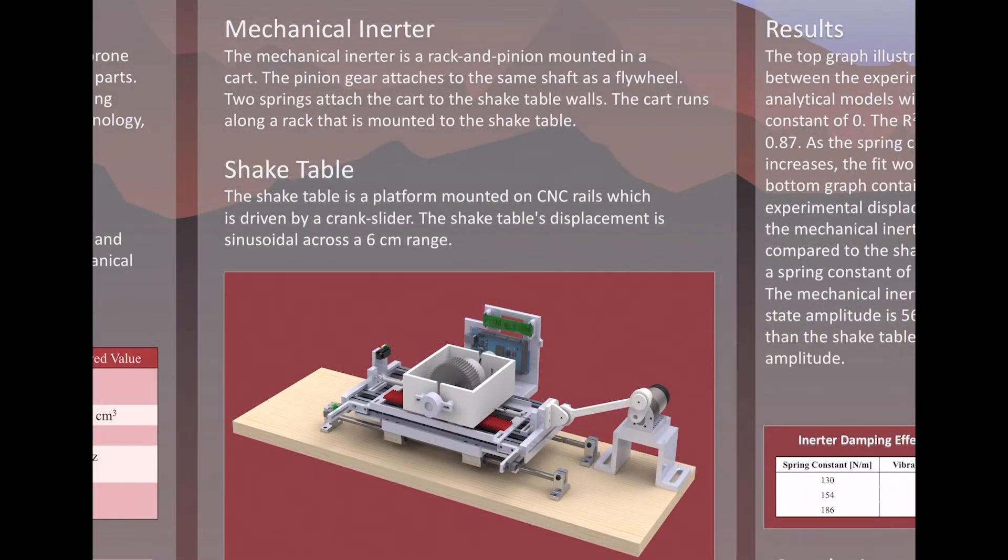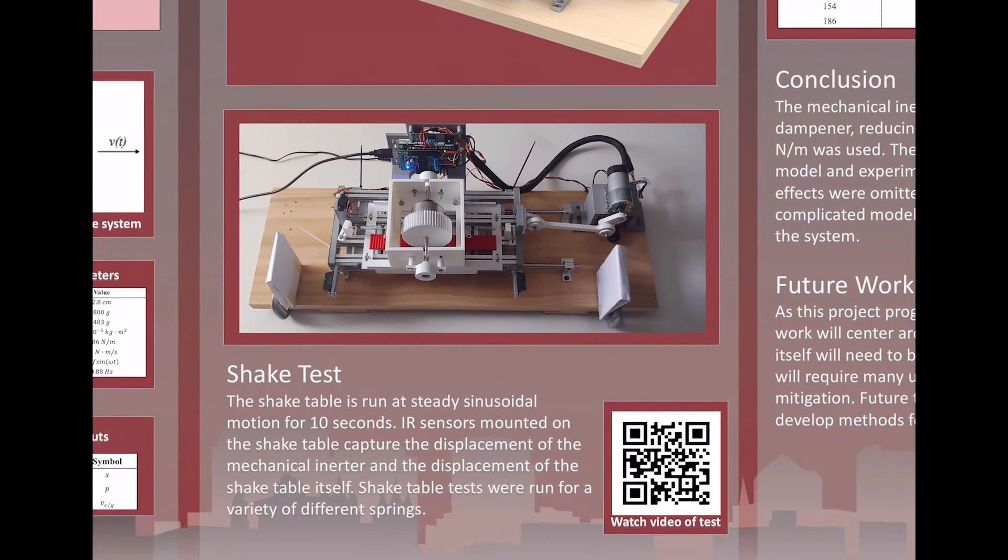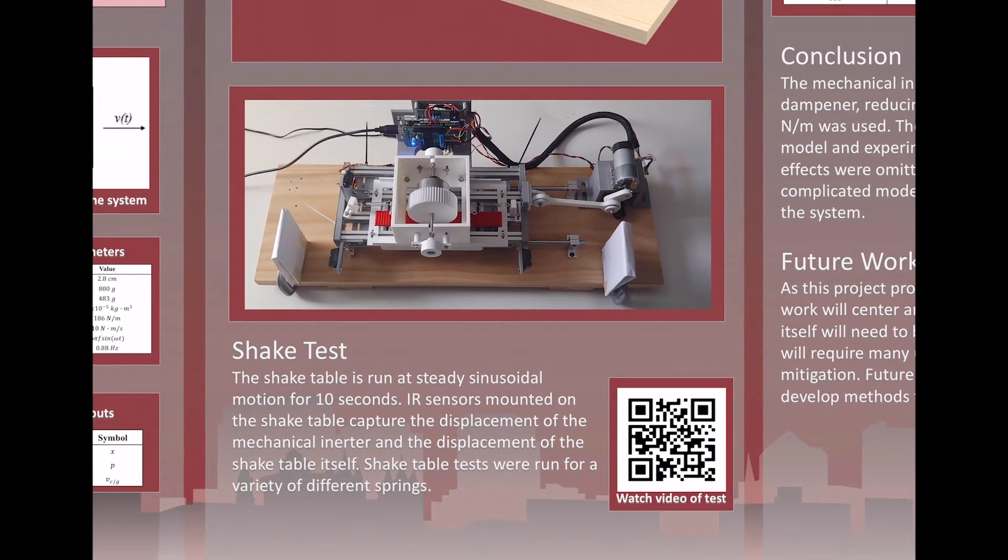We chose a rack and pinion design for our mechanical inerter. Central to our design is a bottomless cart that houses the inerter. Mounted to the cart is a shaft that aligns the large pinion gear and heavy flywheel. The large gear mates with the groove track. As an input to our design, we built our own shake table. The shake table is driven by a single DC motor and crank linkage. The moving base of the shake table is constrained by CNC rails. The input range of the table is around 6 centimeters.